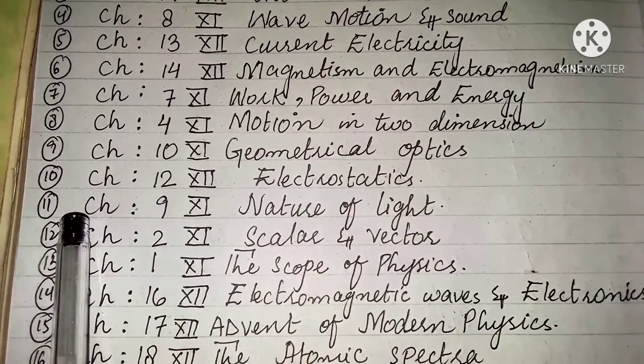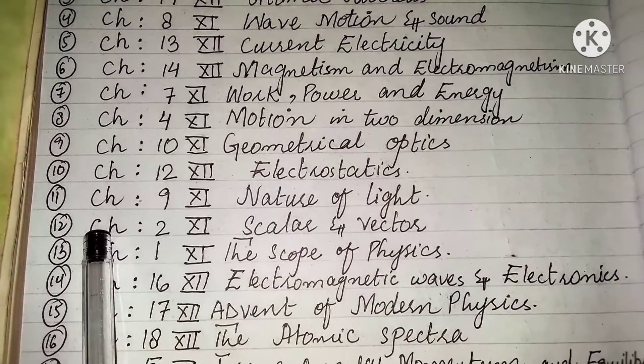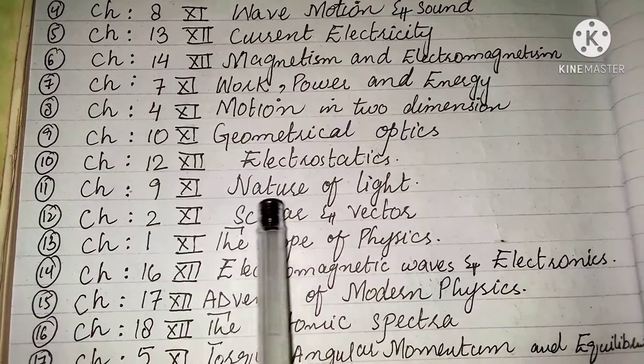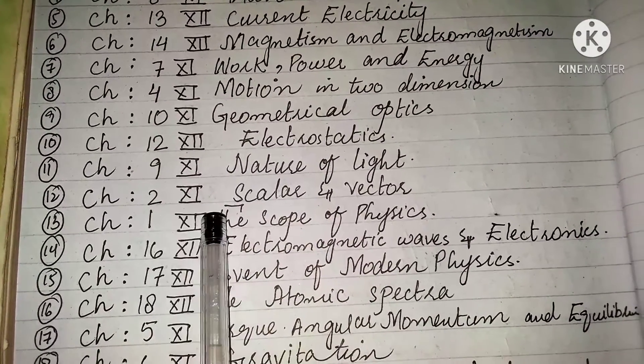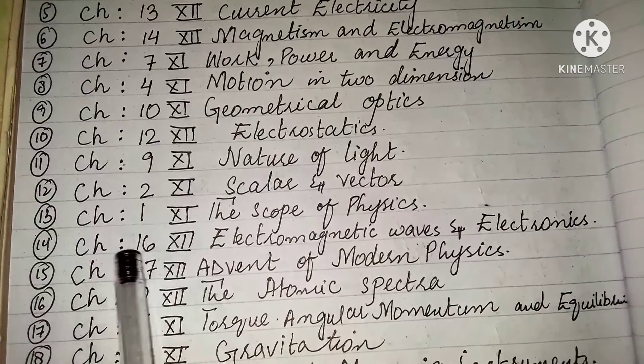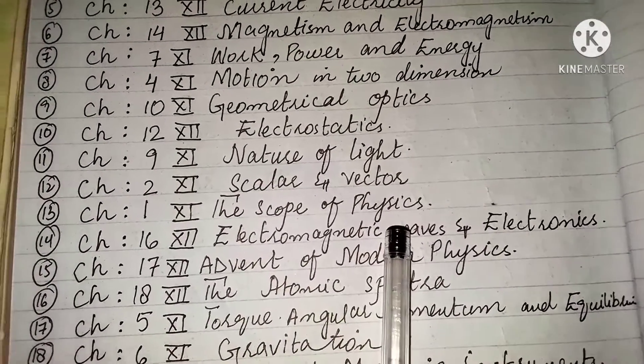Chapter 4, first year, motion in two dimensions. Then chapter 10, first year, geometrical optics. Chapter 12, inter, electrostatics. Chapter 9, first year, nature of light.